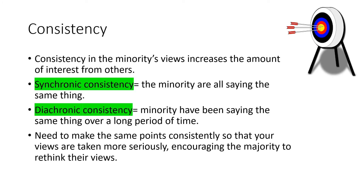Our first thing to look at is consistency. In order for a minority to establish their views and get the majority on board, they need to be consistent, and that will increase the amount of interest they get from others. We have two different terms here: synchronic consistency, where the minority are all saying the same thing, and diachronic consistency, where the minority have been saying the same thing over a long period of time. This makes other people think, if they keep saying the same thing, maybe I should think the same as well. So consistent points are taken much more seriously, and that encourages the majority to rethink their views.